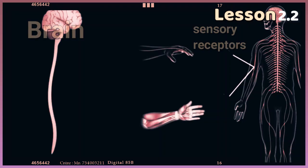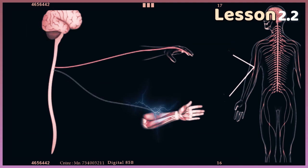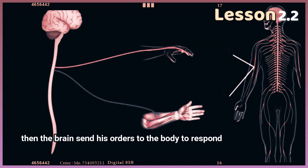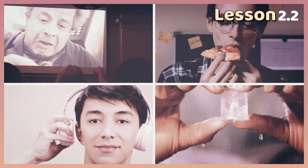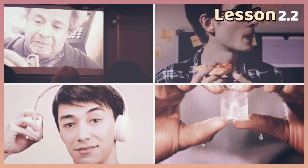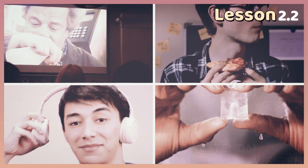You have known from the previous concepts that sense organs collect information about the world around us, then send it to the brain through nerves for processing and understanding. The human's five basic senses.